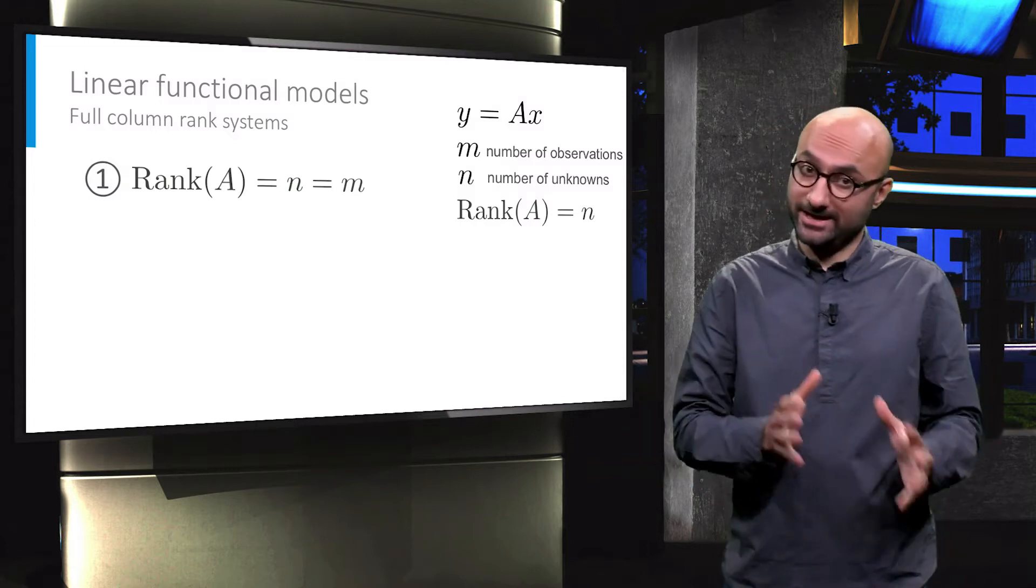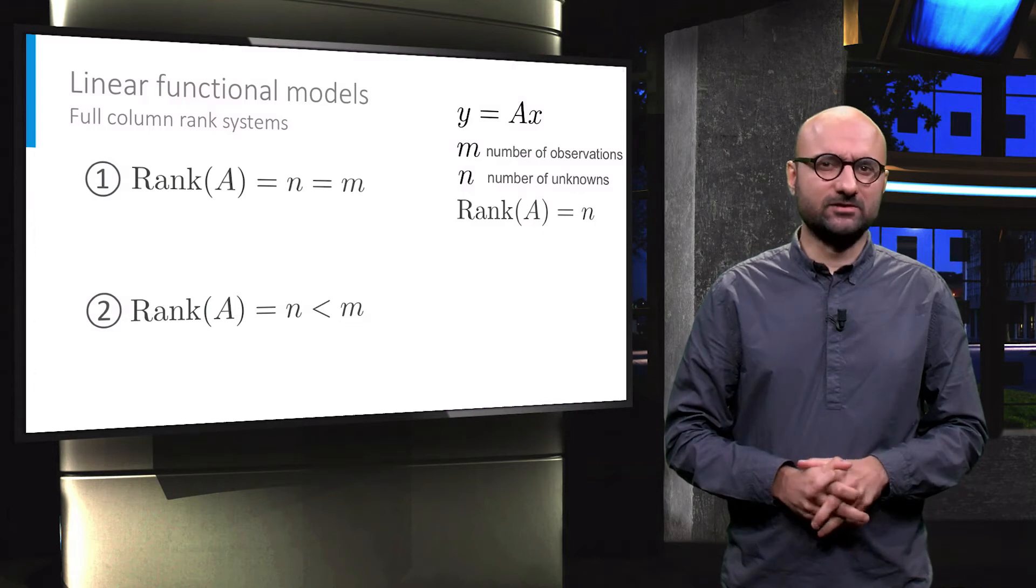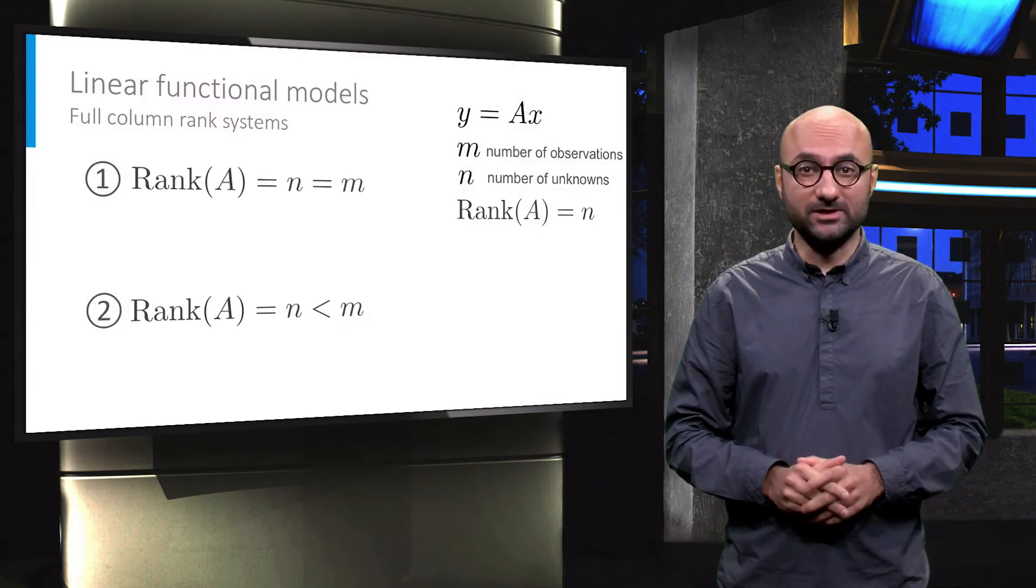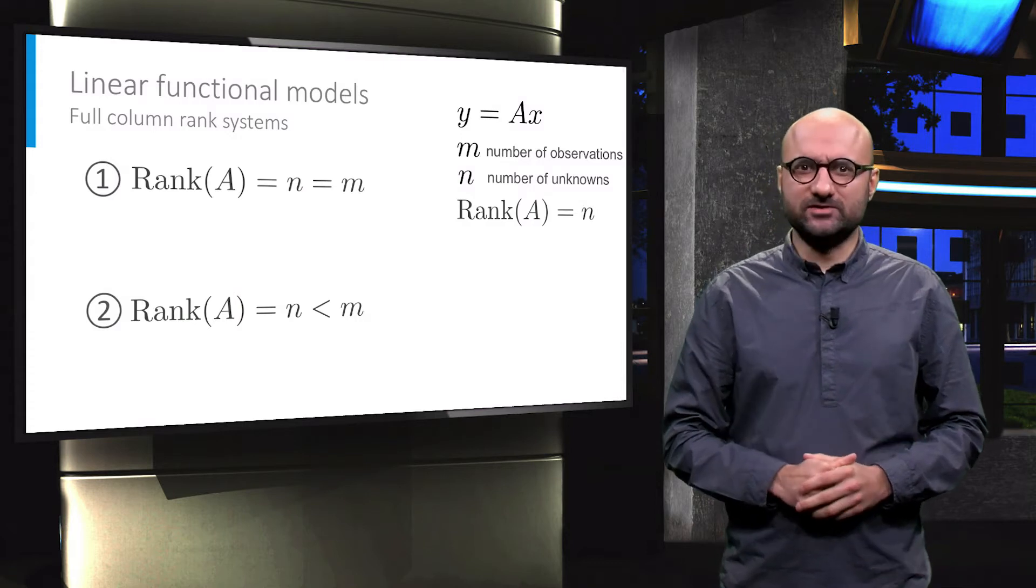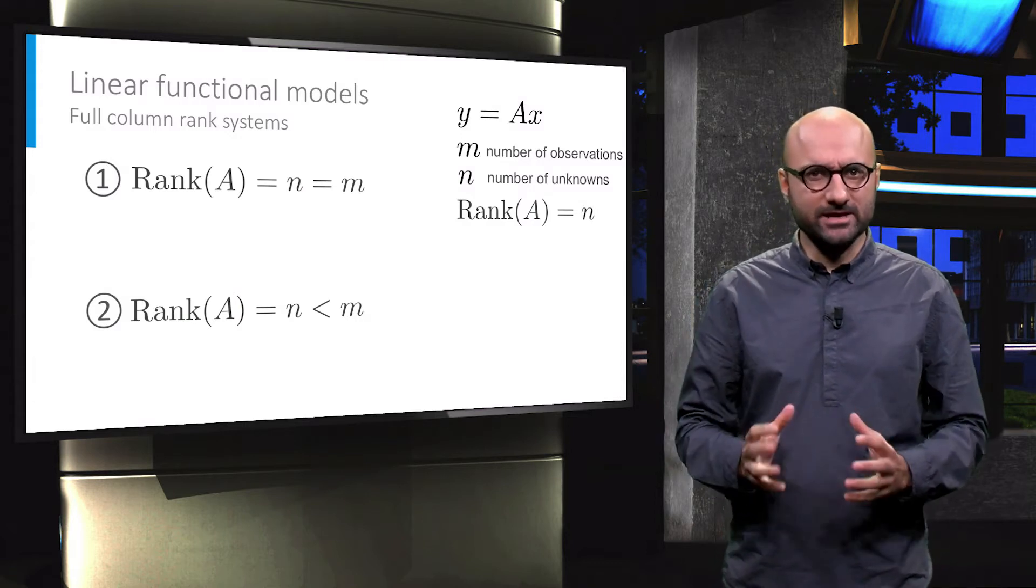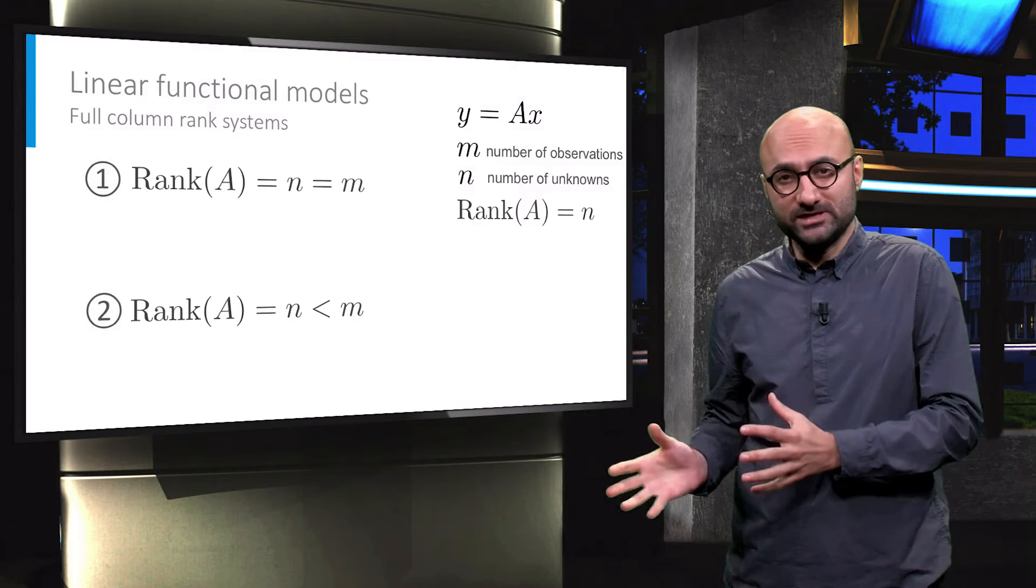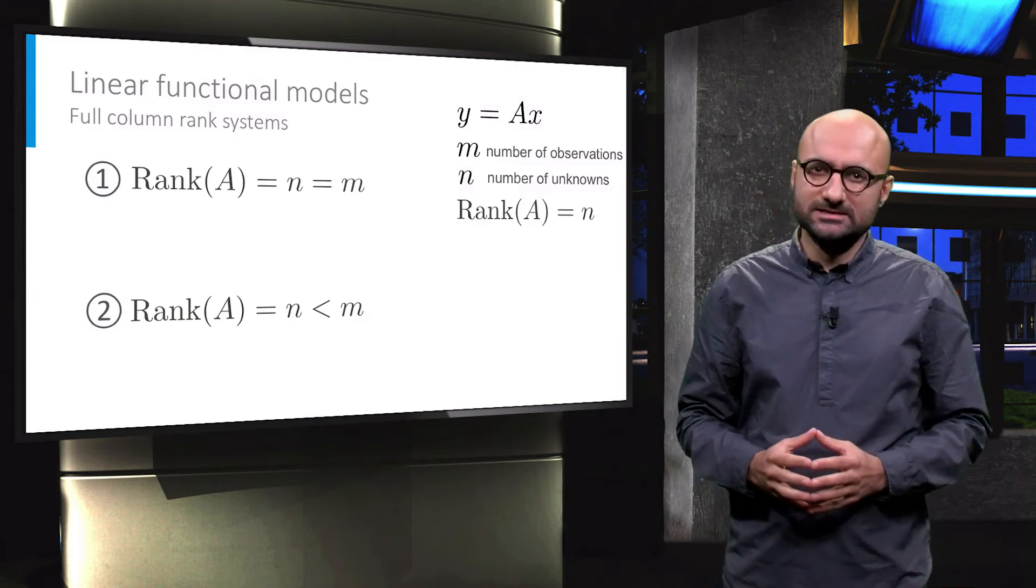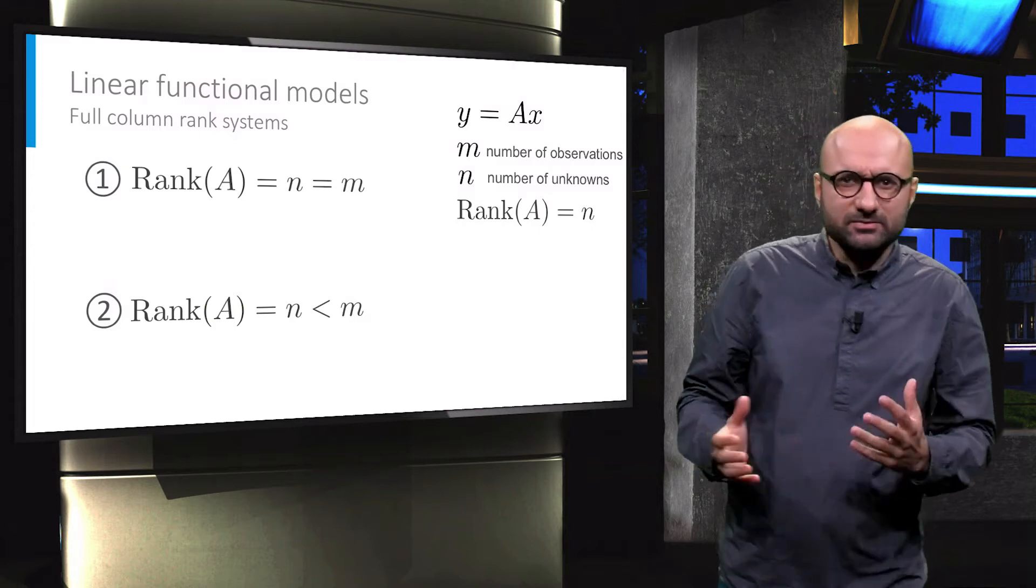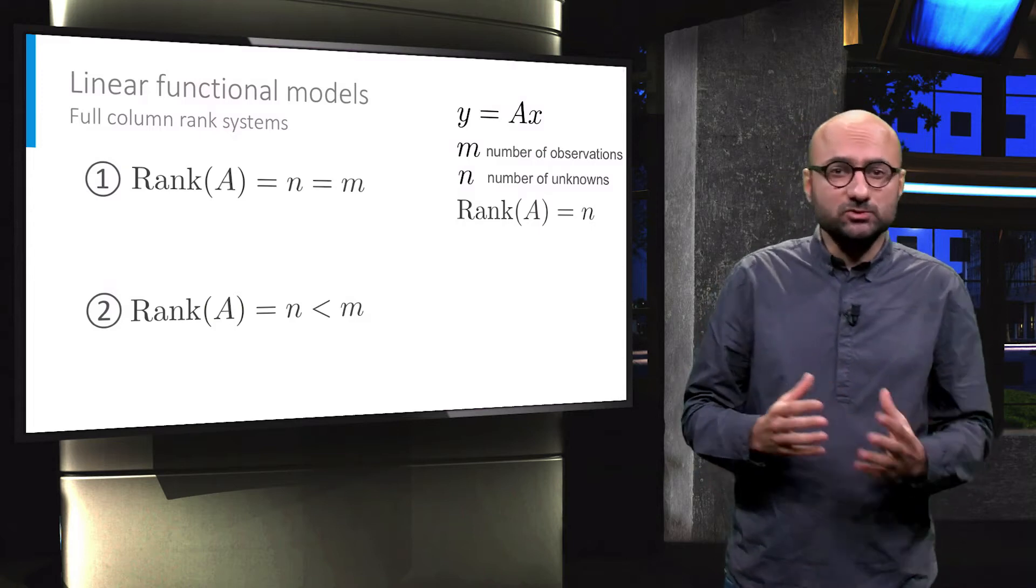In the first case we are dealing with a square A matrix where the number of observations or equations is the same as the number of unknowns. This is the case, for example, when we have two equations and two unknowns or ten equations and ten unknowns.